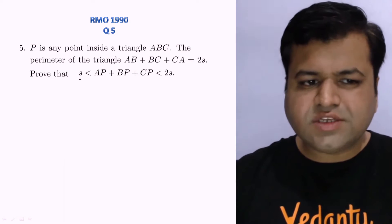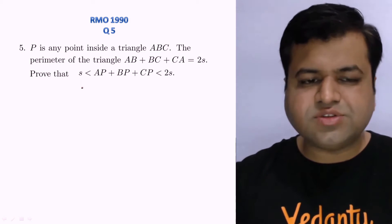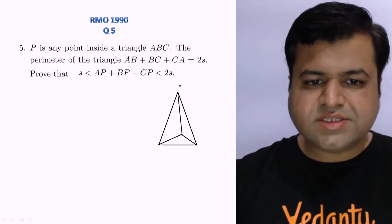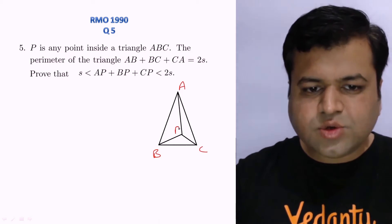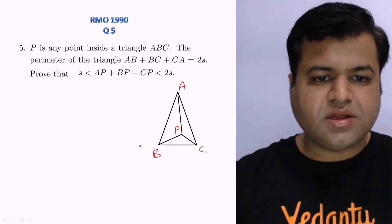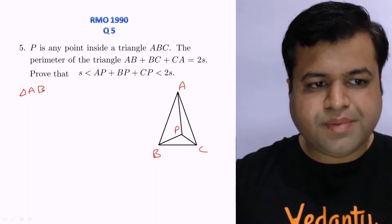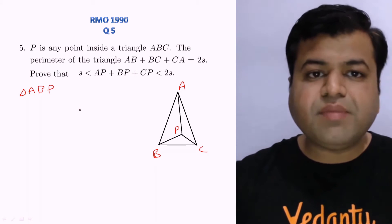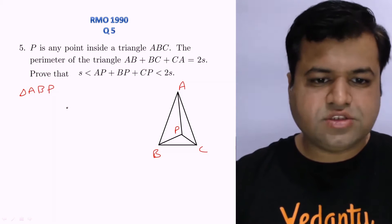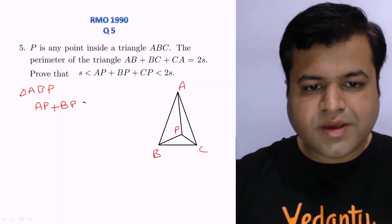The first result is very straightforward. Let's draw the figure — triangle ABC with P as any inside point. If we consider triangle ABP and apply the result that the sum of any two sides of a triangle is always greater than the third, we get AP + BP > AB.